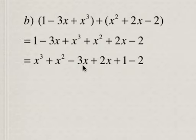And so when we combine like terms, we can add or subtract the minus 3x and the 2x, and we can add or subtract the 1 and the negative 2. So this negative 3x plus 2x is negative x, 1 minus 2 is negative 1. So watch your signs, and we can't simplify any further than that.